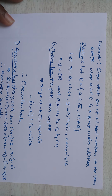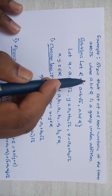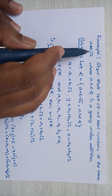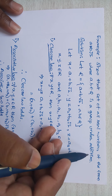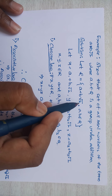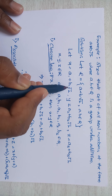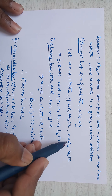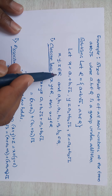Let me show some more examples. Show that the set of all real numbers of the form a + b√2, where a, b ∈ ℚ, is a group under addition. Solution: let R = {a + b√2 | a, b ∈ ℚ}. Let x = a1 + b1√2, y = a2 + b2√2, and z = a3 + b3√2, where x, y, z ∈ R.